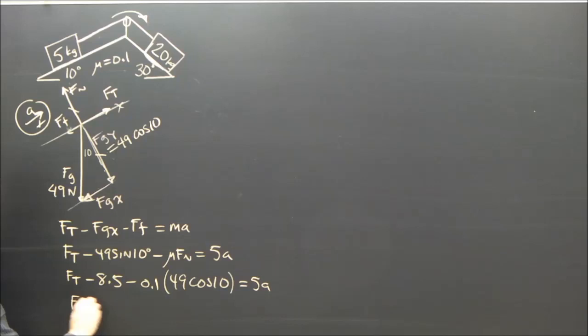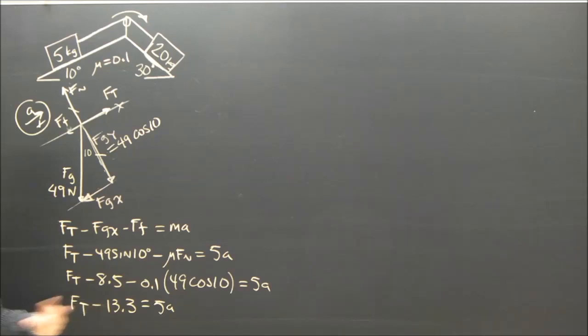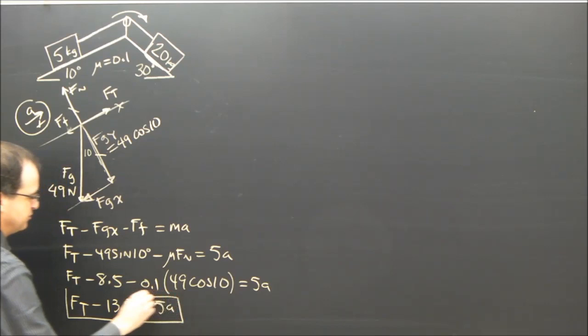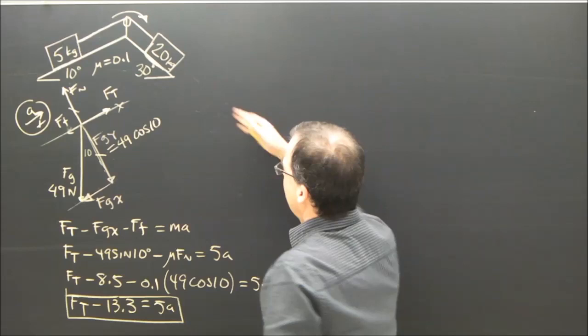So I work this all out. ft, negative 8.5 minus .1 times 49 cos 10 is going to be 13.3 equals 5a. I did this and skipped a line because you can see I'm running out of room. So I got this. This is the important equation. It explains what's happening to this box. ft minus 13.3 equals 5a. Let's do the same for this box and then we'll put it all together.